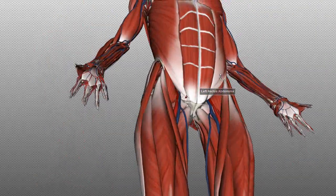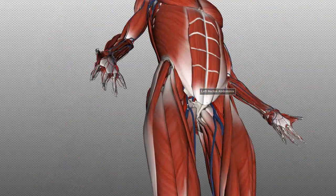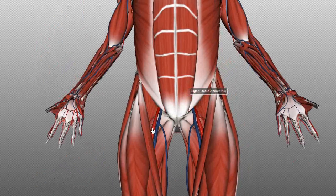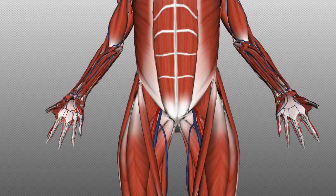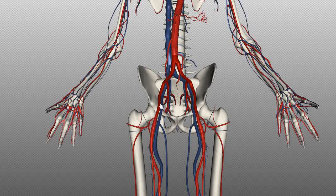The femoral artery passes through quite superficially, so this pulse is also palpable. You can feel it between the midpoint of the pubic symphysis and the anterior superior iliac spine — that is the femoral pulse.